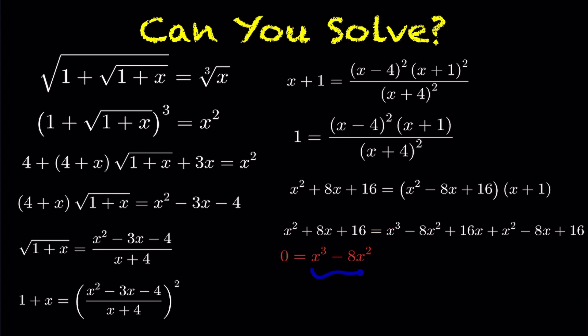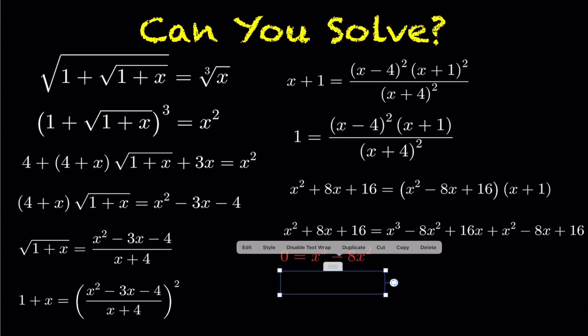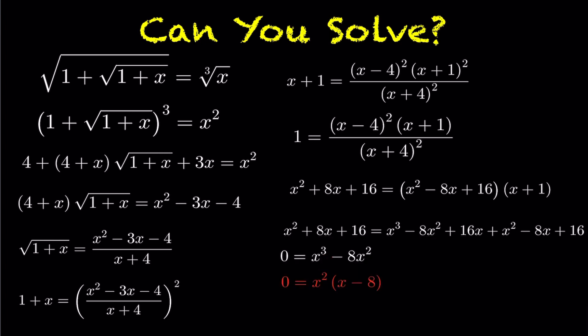Bringing everything to one side gives a lot of cancellation. We end up with x cubed minus 8x squared. Factoring out x squared gives us two possible roots: x equals zero or x equals eight.